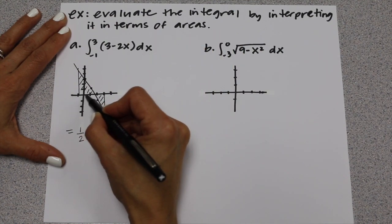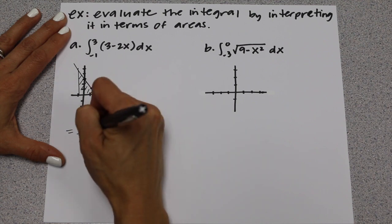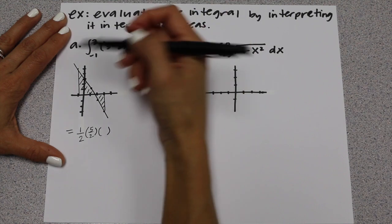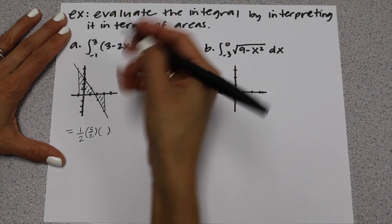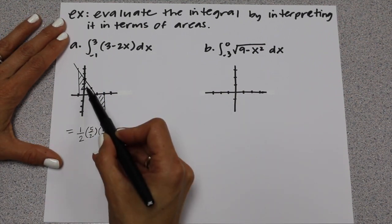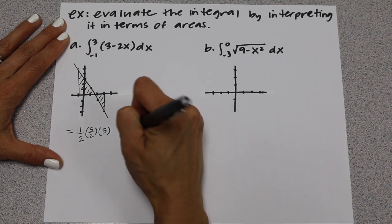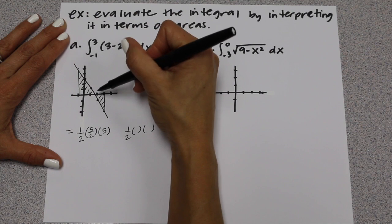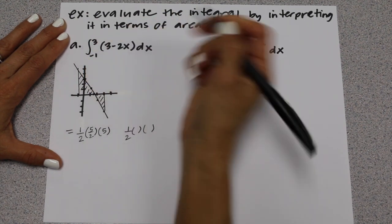The base is going to be 2 and a half, which is the same as 5 halves. The height of this triangle goes up 1, 2, 3, 4, 5 — so the height is 5. That would be the area of the triangle on the left. For the area of the triangle on the right, we're still going to use one-half base times height. The base of this triangle, because it hits right in between 1 and 2, is 1 and a half or 3 halves.